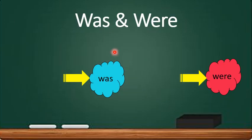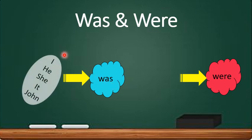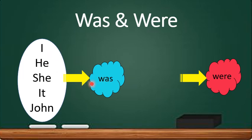Now, I'm going to show you how to use was and were correctly. Was and were are both the past tense of verb to be. We use was for the singular nouns or pronouns, which means there is only one person there. Like I was, he was, she was, it was, John was.